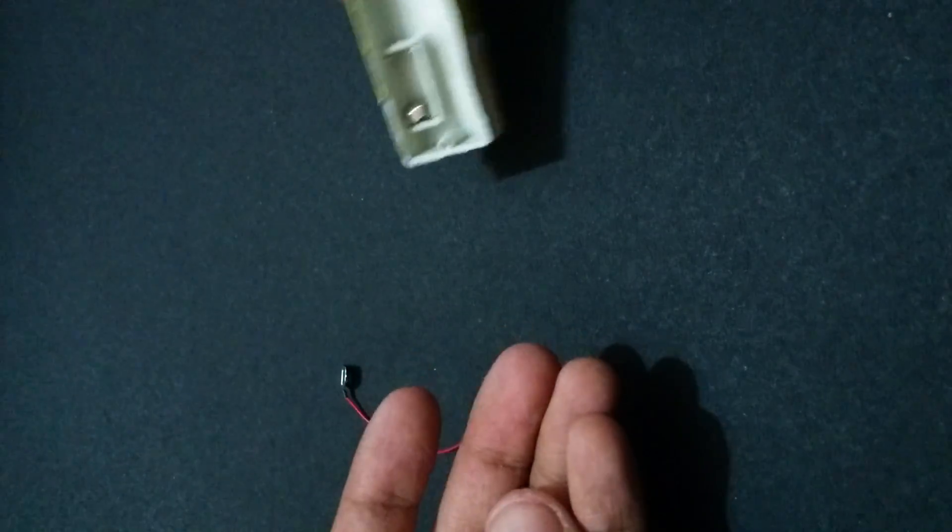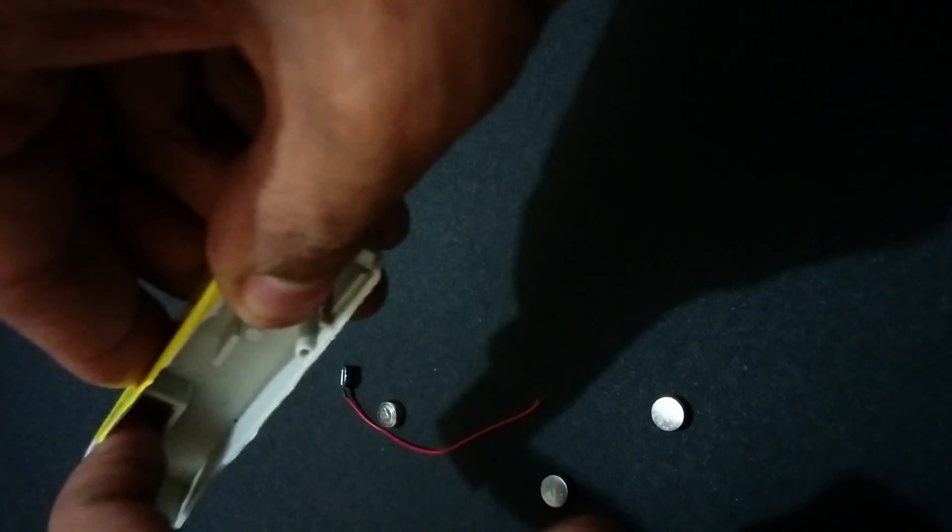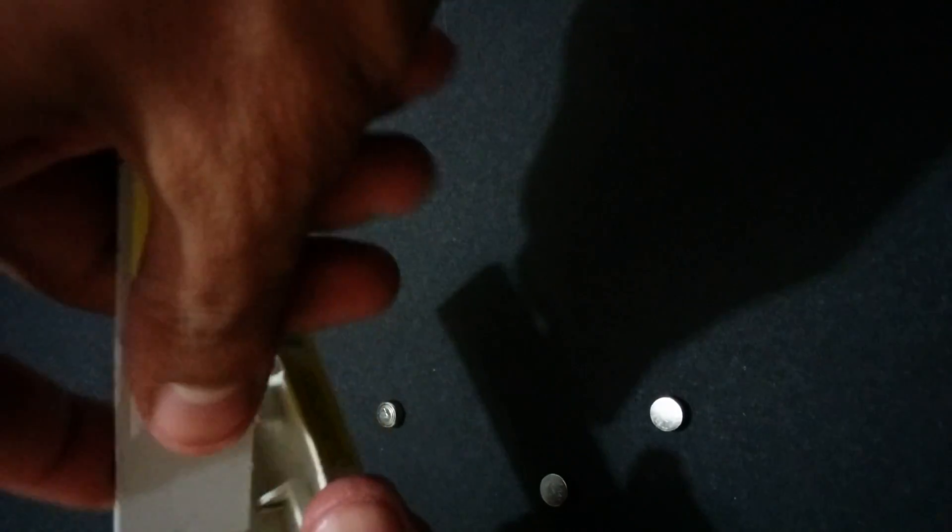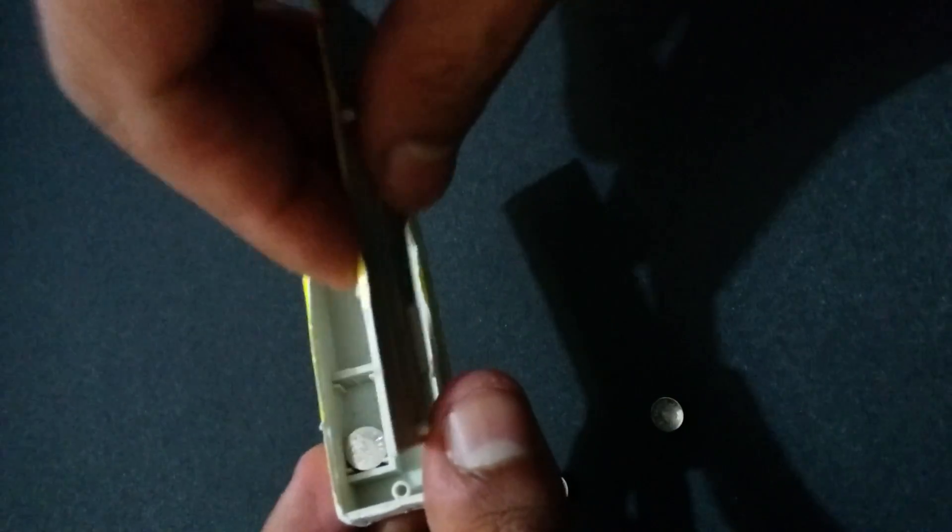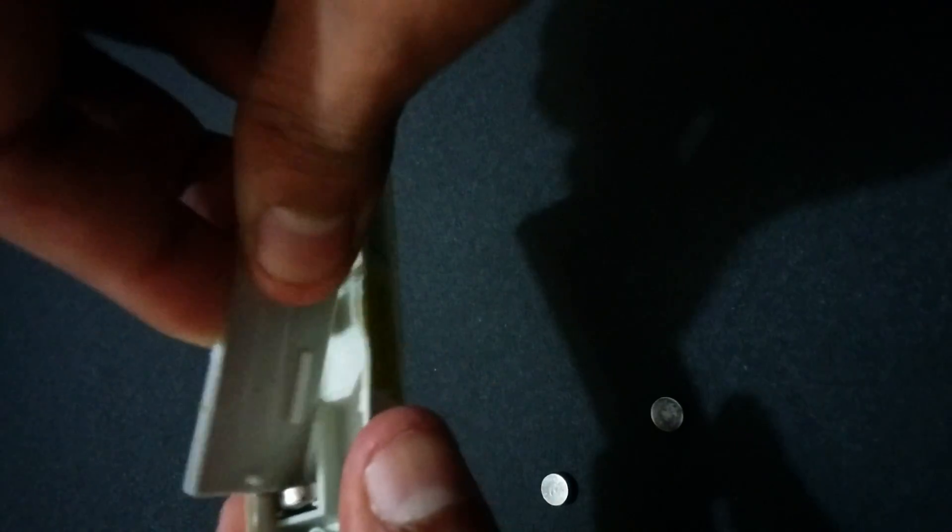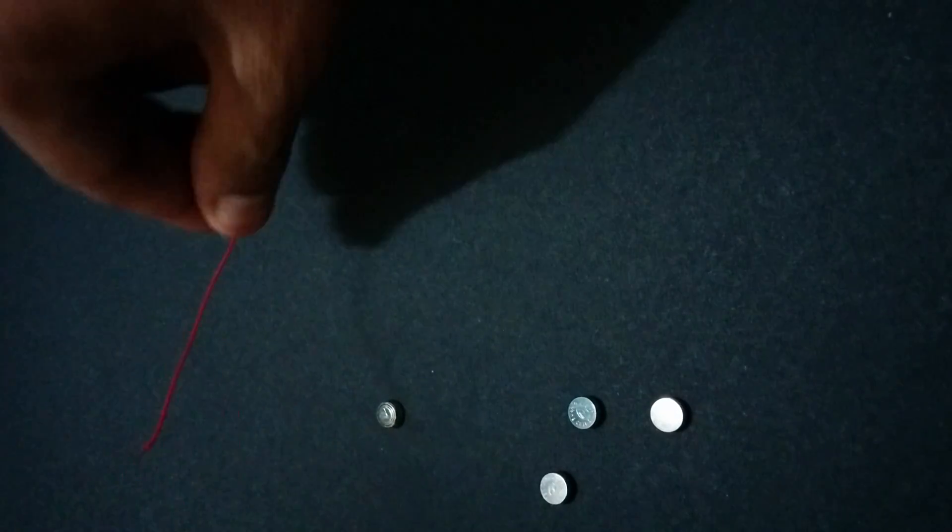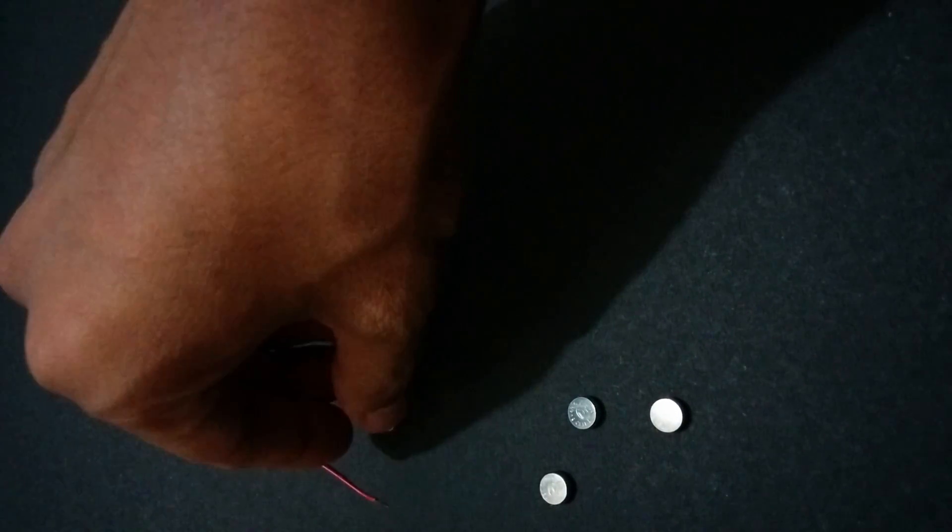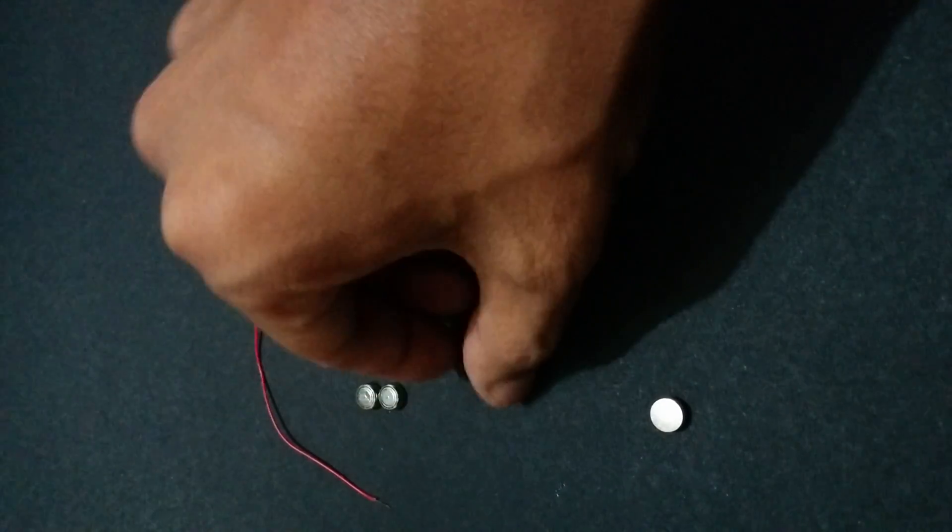Second thing is these buttons. We'll try to remove these also. It's hard to remove so we'll use this. Yes, as you can see, first thing was this wire, second thing was these four small cells.